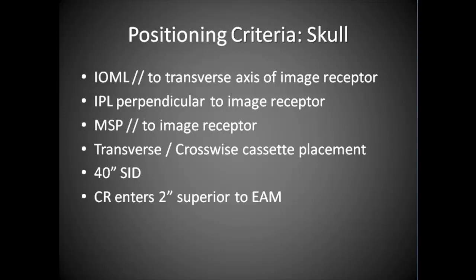The transverse or crosswise cassette placement — for the skull, this is really the only view that you should have a crosswise cassette placement. 40-inch SID, and your central ray should enter approximately 2 inches above the external auditory meatus.